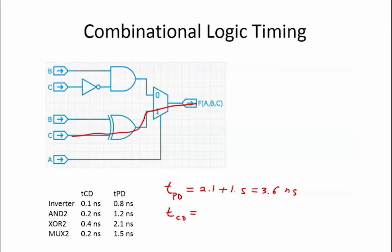For this circuit, the shortest path is from input A through the selector of the multiplexer. So the contamination delay for this circuit is equal to the contamination delay of the multiplexer, which equals 0.2 nanoseconds.